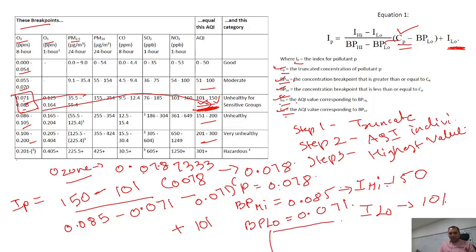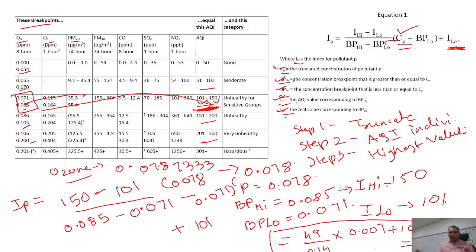Now apply the formula: IP for ozone = [(IHI − ILO) / (BPHI − BPLO)] × (CP − BPLO) + ILO = [(150 − 101) / (0.085 − 0.071)] × (0.078 − 0.071) + 101 = [49 / 0.014] × 0.007 + 101, which gives approximately 125.5, so we consider 126. This is the AQI value for ozone. If this is the highest among all pollutants, then the reported AQI will be 126.